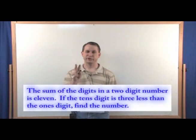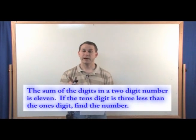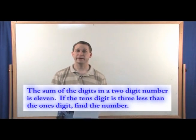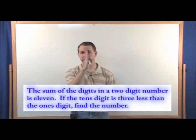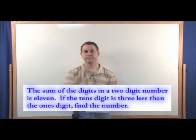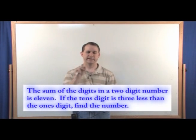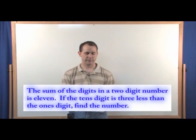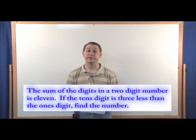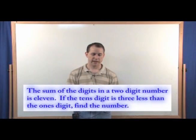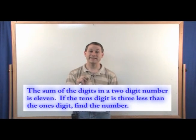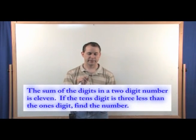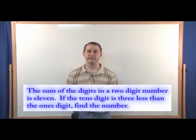We have a two-digit number and we're asked to find that number. There are two digits, and the sum of those digits must equal 11. If the tens digit is three less than the ones digit, we have to find the number.